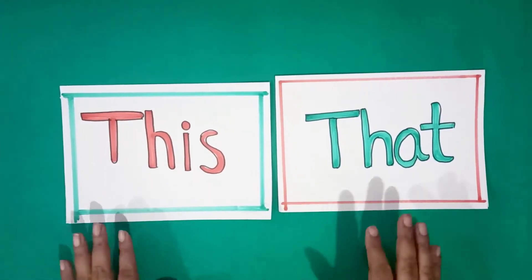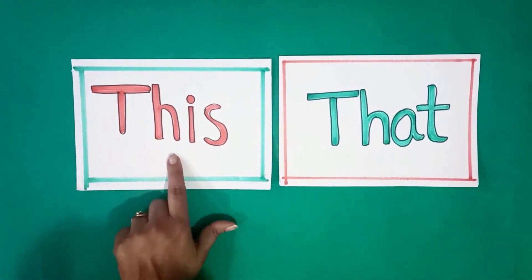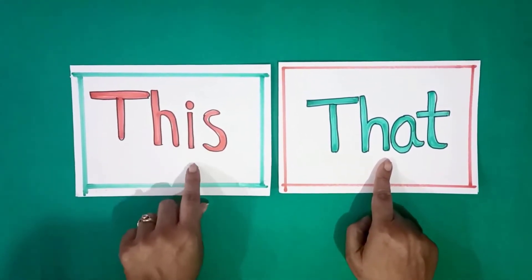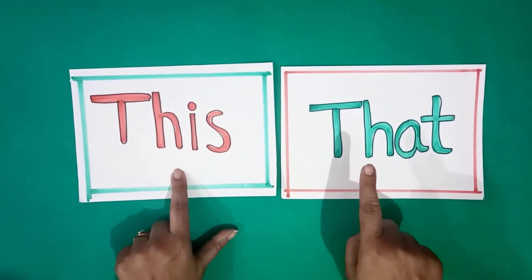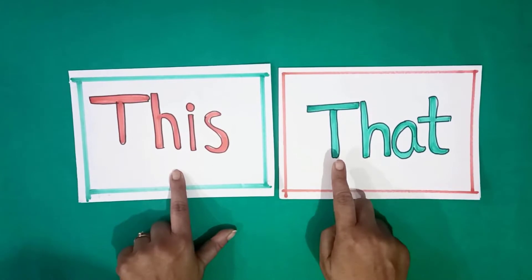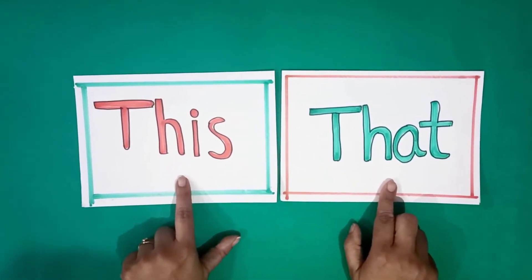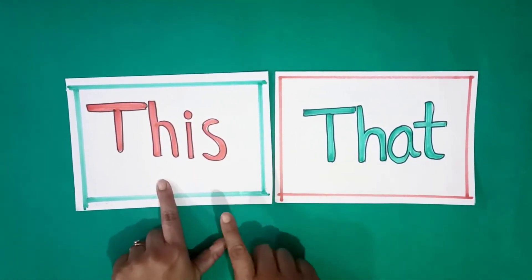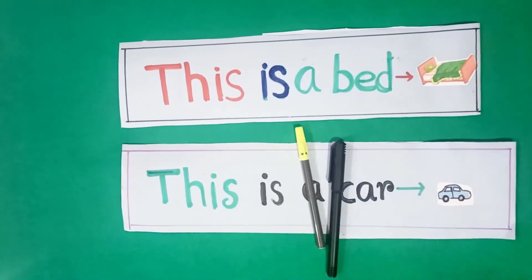Hello children, today I am teaching you about the concept of this and that. This is the spelling of this, T-H-I-S, this. And spelling of that is T-H-A-T, that. Now I will explain you where we use this and where we use that. Now I will explain you about the concept.